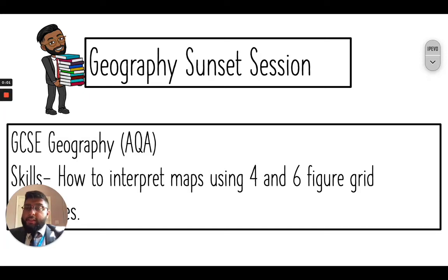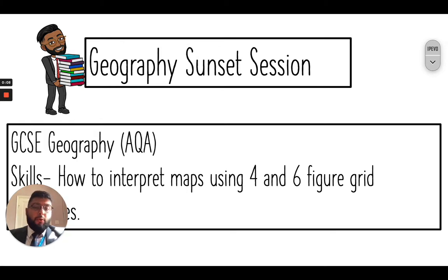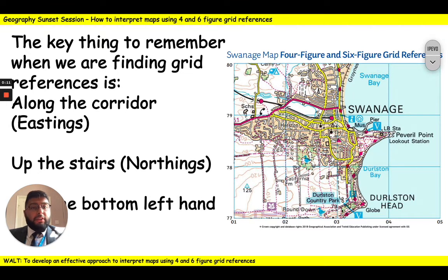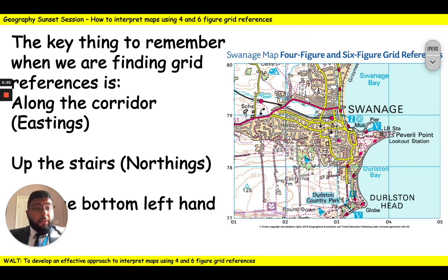Welcome to a Geography Sunset session. Today we're going to be focusing on a really important geographical skill, and that is how to interpret maps using four and six figure grid references. Grid references are used to locate places on a map. They can be more general, so they can be four figure grid references, or they can be much more specific, and for that we would use six figure grid references.